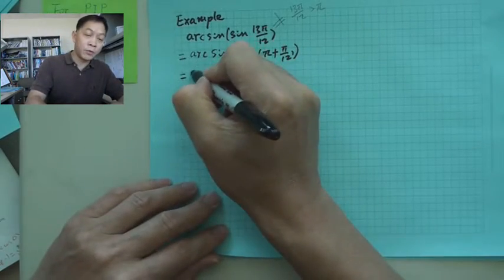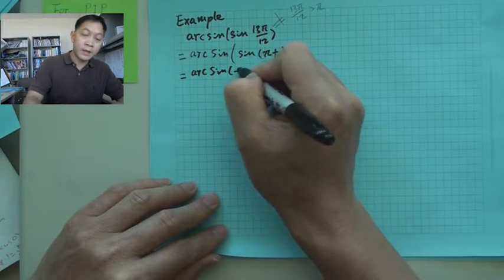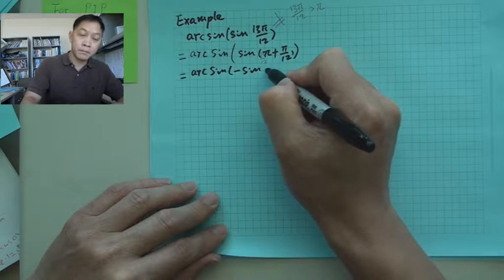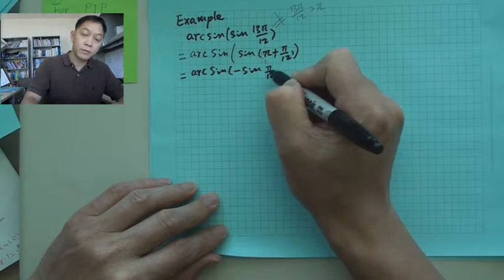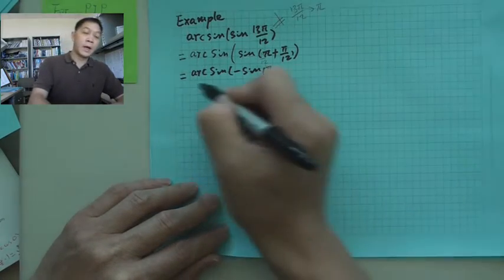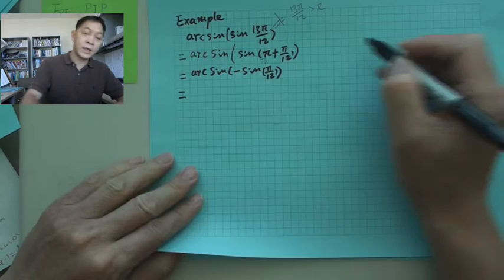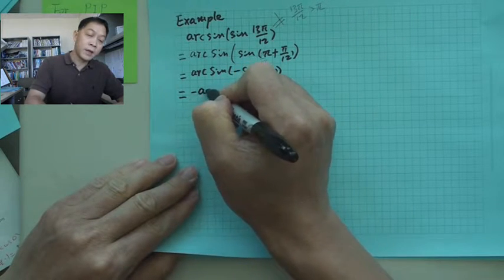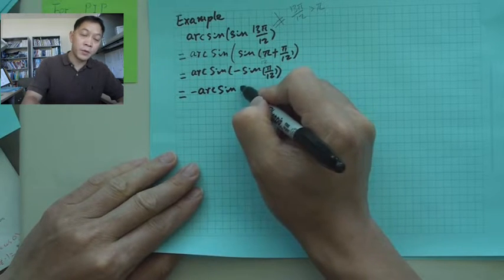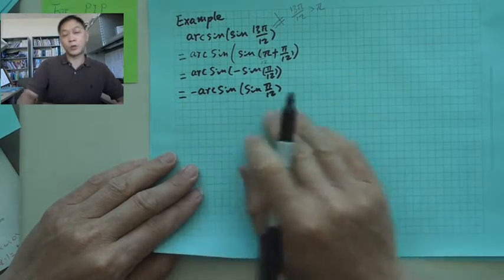Now, you have pi plus pi over 12, and by the formula I just reviewed, x plus pi, so what you have will be arcsine negative sine pi over 12. Now, if you remember, arcsine, if here is negative, then negative can get out. This is what we did before.